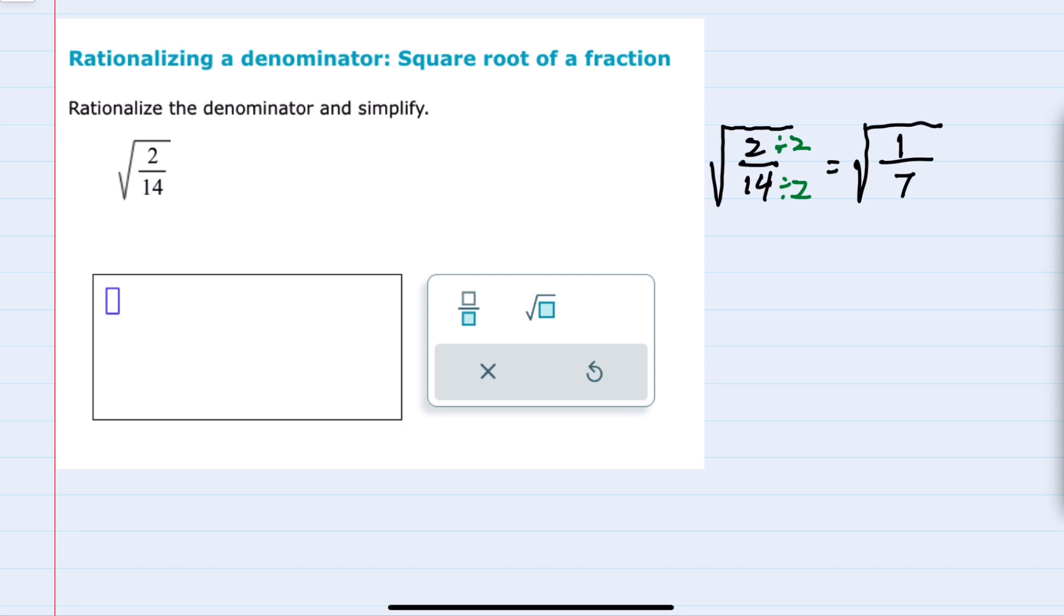From here to rationalize I can separate the square root of the fraction 1/7 into the square root of 1 over the square root of 7. And this will simplify further because the square root of 1 is 1. So this is just 1 over the square root of 7.